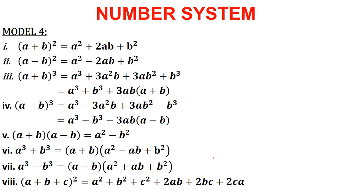Here is the formula list. The first two formulae we know very well, but it is better to remember the rest as well. The first one is: (a + b)² = a² + 2ab + b². The next one is: (a - b)² = a² - 2ab + b². The next one is: (a + b)³ = a³ + 3a²b + 3ab² + b³.